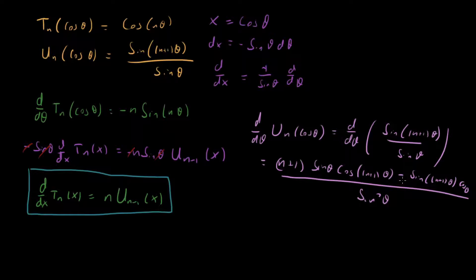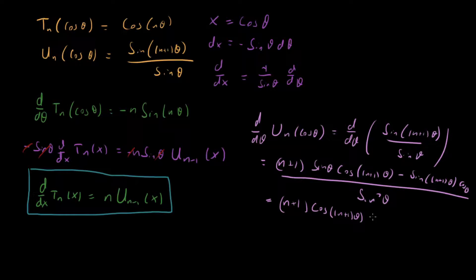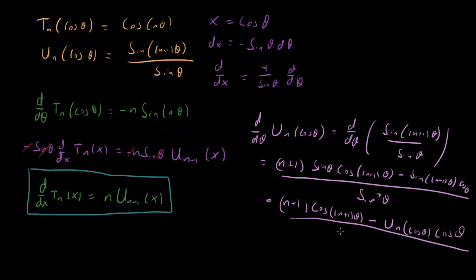We can simplify this: the sinθ in the numerator cancels with one factor of sinθ in the denominator. And sin((n+1)θ) divided by sinθ is just U_n. So the whole expression can be re-expressed as [n+1)·cos((n+1)θ) − U_n(cosθ)·cosθ] / sinθ. Now the last thing to do is change variables.